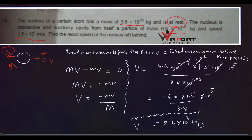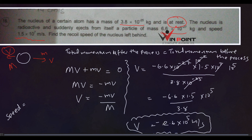The negative sign indicates direction. Since the question asks for recoil speed (not velocity), we remove the negative sign. The recoil speed of the nucleus is 2.6 × 10⁵ m/s.